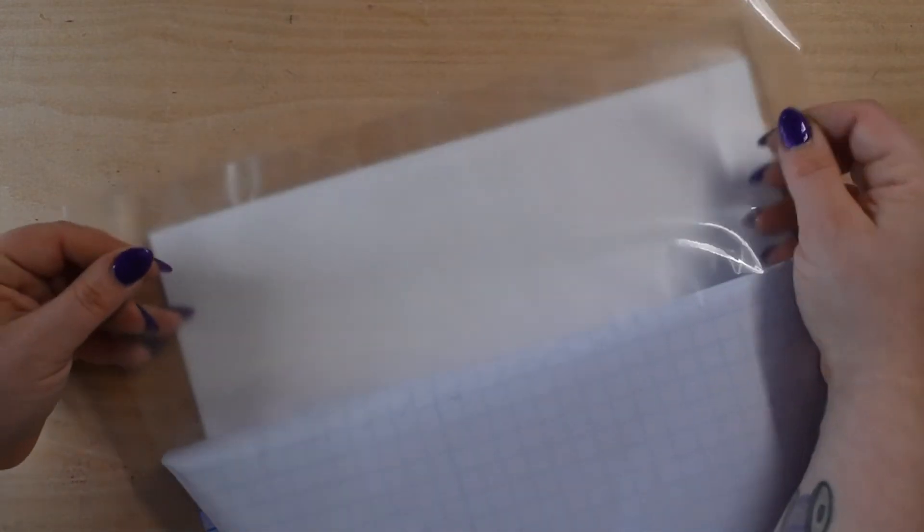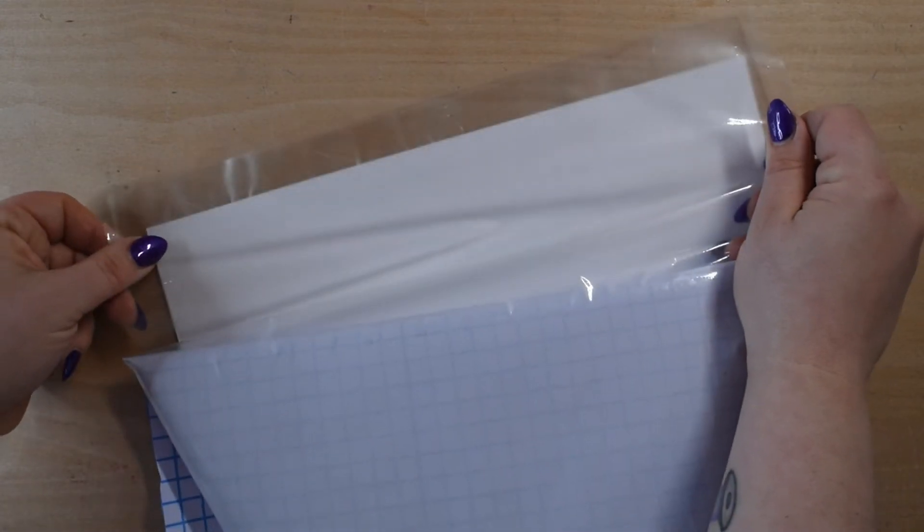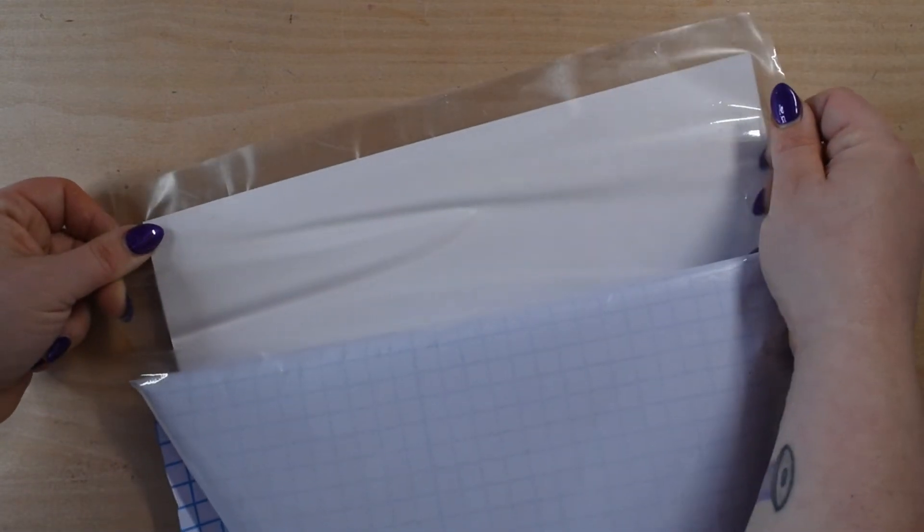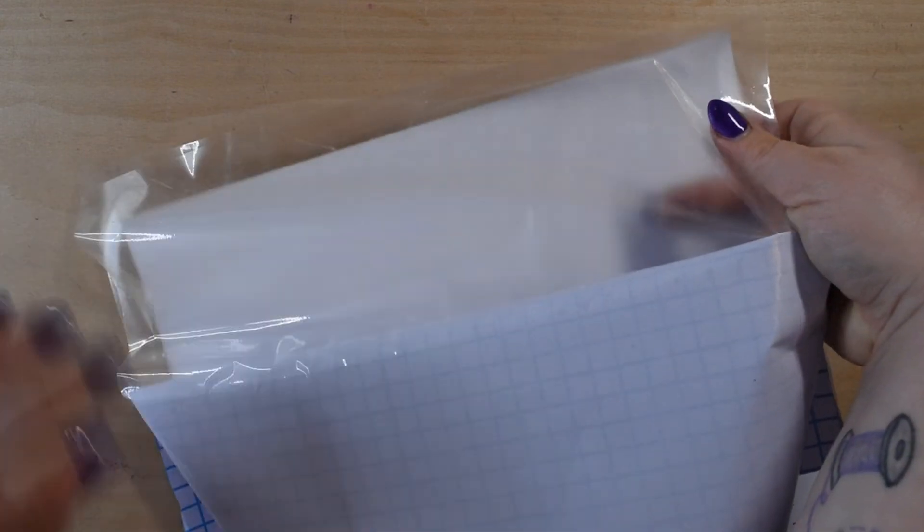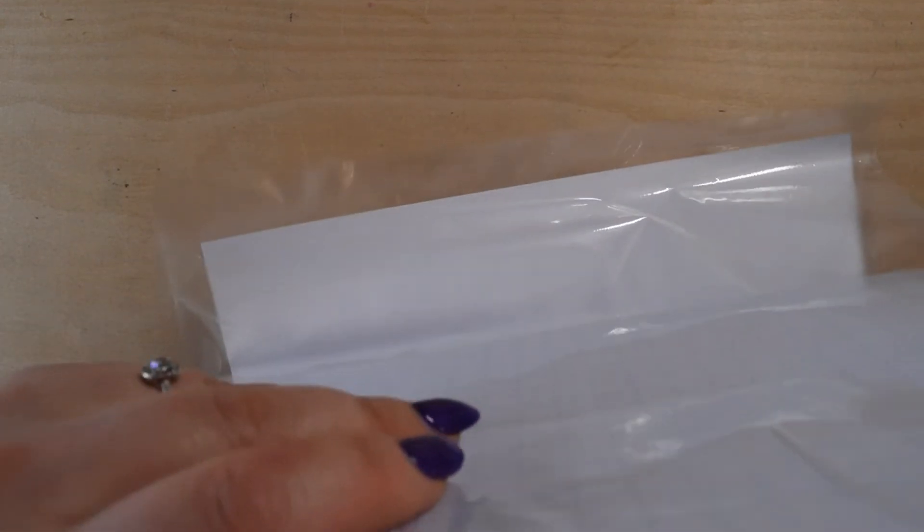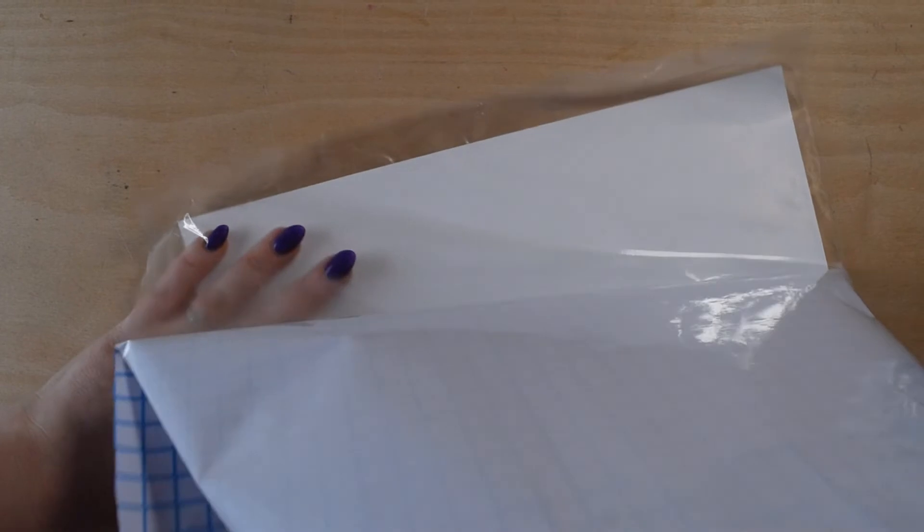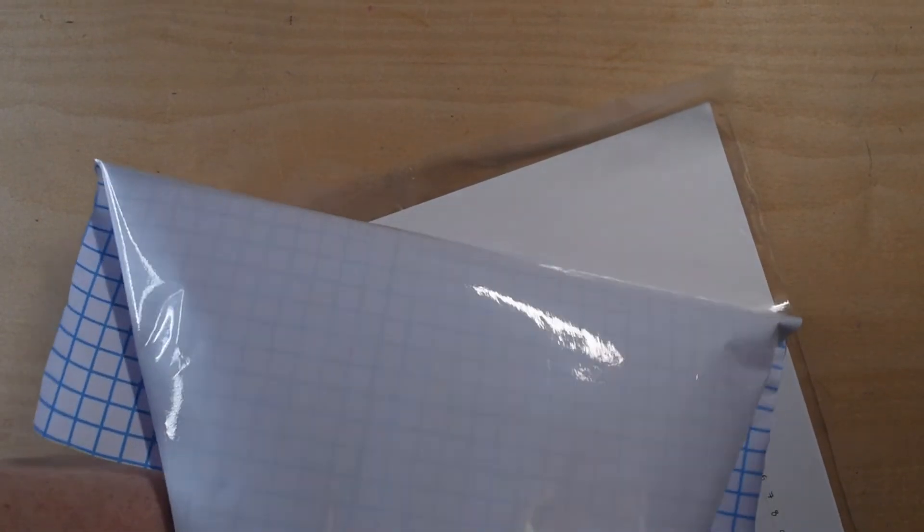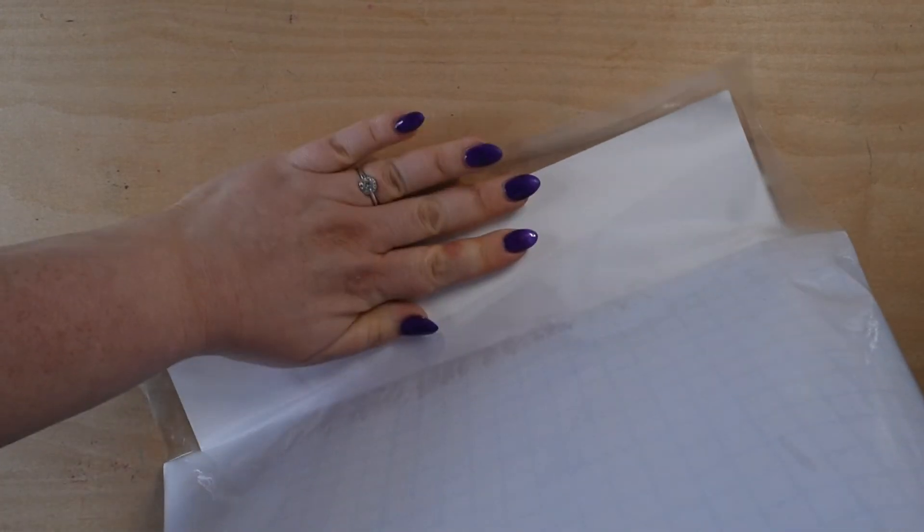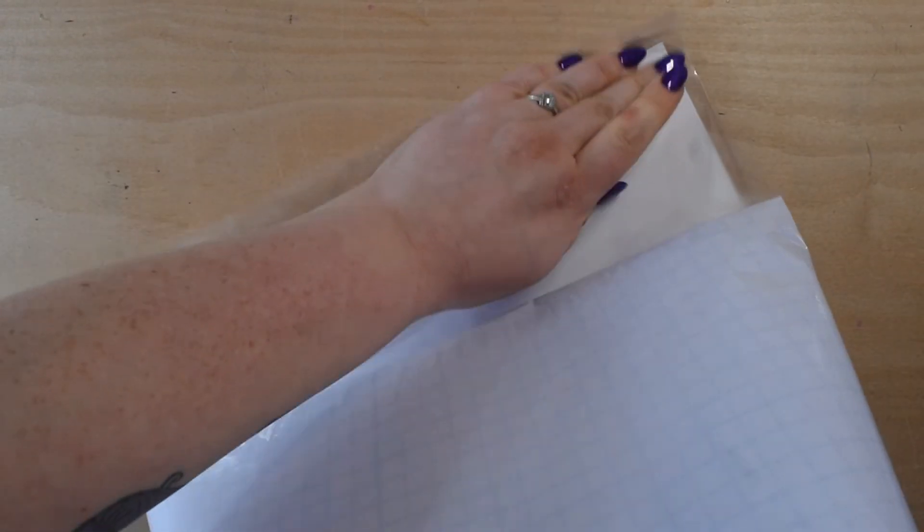I'm just going to line it up with the piece that I've put on the other side and try not to get it stuck to any other pieces I don't want it to just yet. We're just basically doing the exact same thing, and then the edge pieces we're going to trim off.